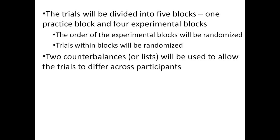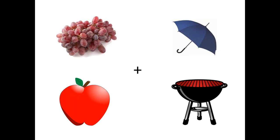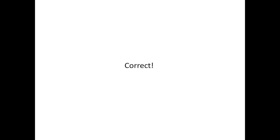Let me show how a trial proceeds. The participant first sees a fixation cross with a small region specified around it. When they look at that fixation cross, the trial automatically starts. Then they see four pictures and hear instructions — 'click on the grapes.' The subject clicks on one of the four images and receives feedback such as 'correct.'